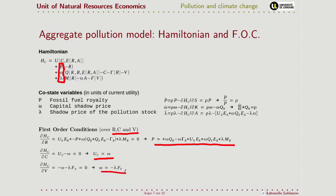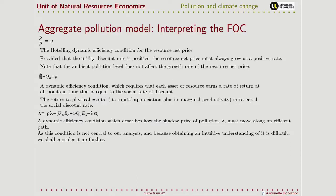In terms of dynamic efficiency conditions, not much changes from what we discussed before, so I won't spend much time on this. This is our Hotelling rule on the price of the natural resource — specifically the royalty of the natural resource — expressed in terms of the shadow price of capital. We also have a third dynamic efficiency condition, but its interpretation is complex and we will skip its detailed analysis.